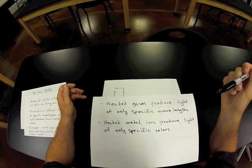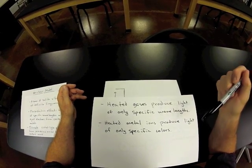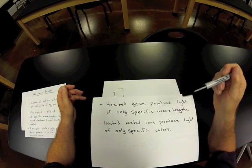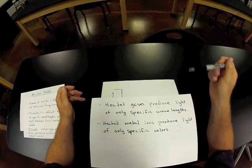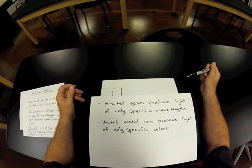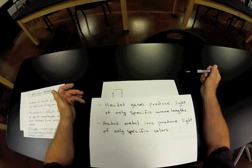Certain salts, when they're heated, like, for example, sodium chloride or lithium nitrate, when those kinds of salts are heated, they produce very specific lights that they give off or that they radiate outward.